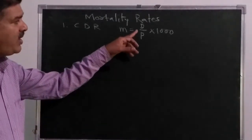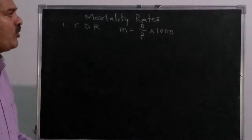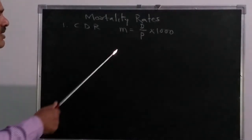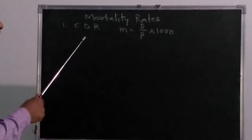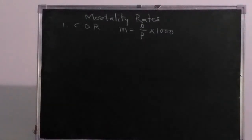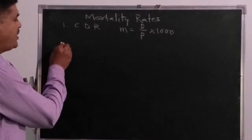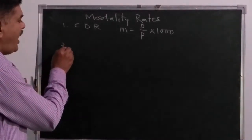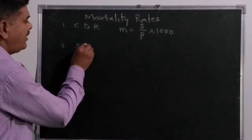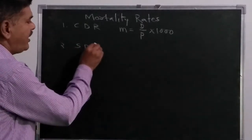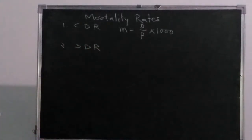In CDR we are taking total deaths per annum — how many deaths have taken place per 1000 population. This is the main drawback of CDR. To overcome this drawback, we proceed to understand specific death rate.